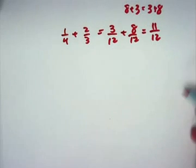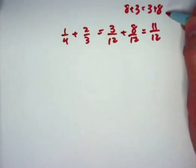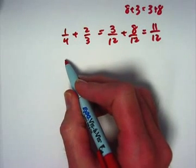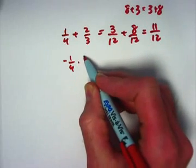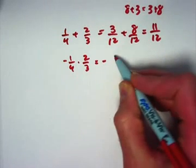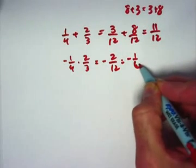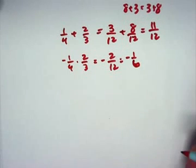Multiplication is also commutative. Before, we did two-thirds times negative one-fourth; if I had done negative one-fourth times two-thirds instead, it still would have given me negative two-twelfths, or negative one-sixth. Multiplication is commutative because multiplication of integers is also commutative.